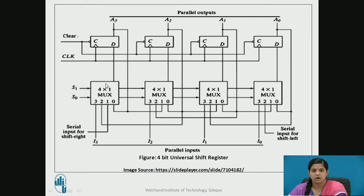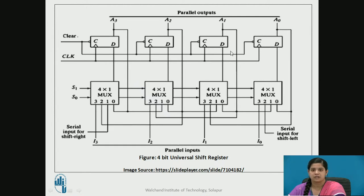Whatever input is selected, that is taken as the input for D flip-flops. Here I3, I2, I1, and I0 are the parallel inputs, and A3, A2, A1, and A0 are the parallel outputs. As it is a synchronous circuit, a common clock is given to all flip-flops and the clear connection is also common. The serial input for the shift right register is given to the first multiplexer's input 1, and the serial input for the shift left register is given to the last multiplexer at pin number 2.